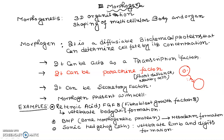A morphogen can act as a transcription factor, a paracrine factor — which works at short distances in nearby cells — or a secretory factor present within the cell. Examples include retinoic acid, FGF8 (fibroblast growth factor 8) involved in vertebrate body axis formation, BMP (bone morphogenetic proteins) involved in mesoderm formation, and Sonic Hedgehog involved in vertebrate limb and digit formation.